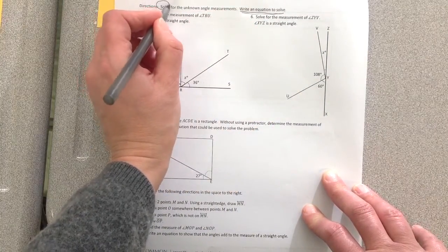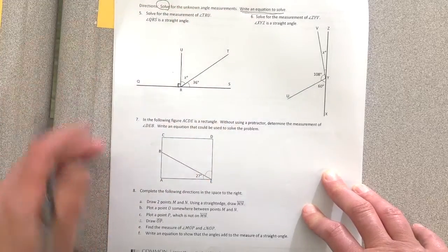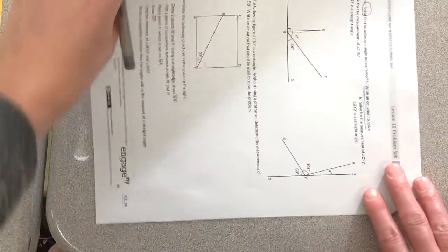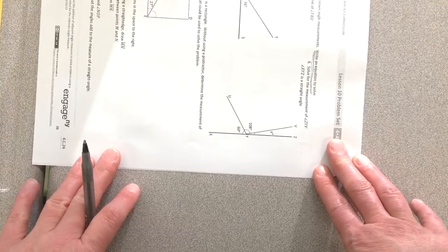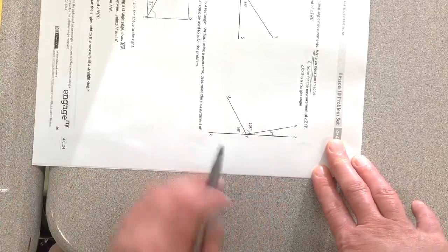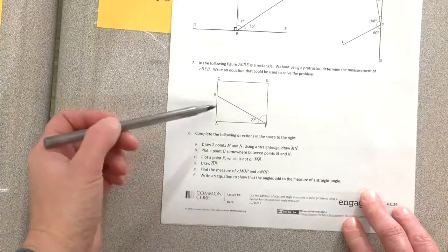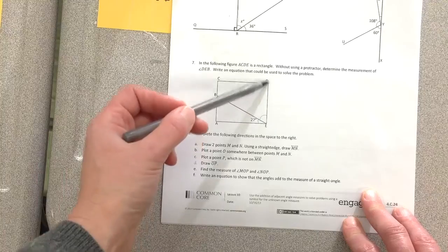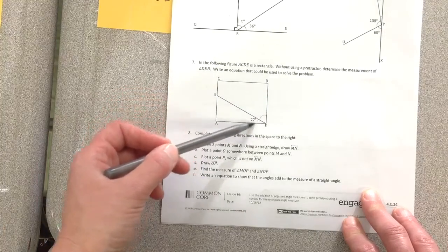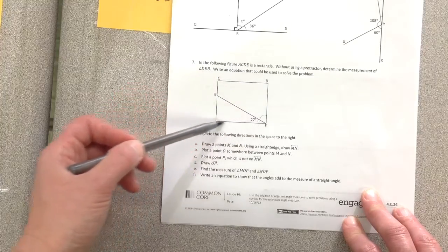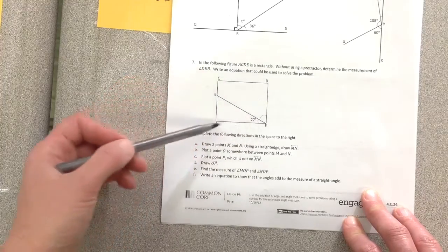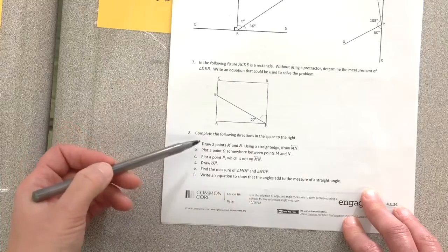Okay, so you have to solve for the unknown and you have to write. Same thing. This one I think would be easier if you turned it this way. Okay, there's your straight line. There's your straight angle. This one's very similar to the one I showed you. Here we have a shape. This is 27, but you should know what this is right here to know the total. Number eight. You're supposed to use the space over here and follow the directions.